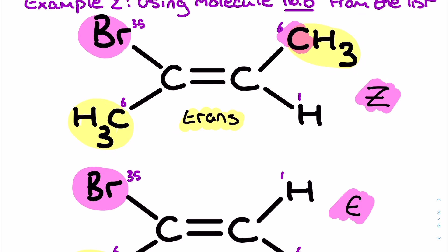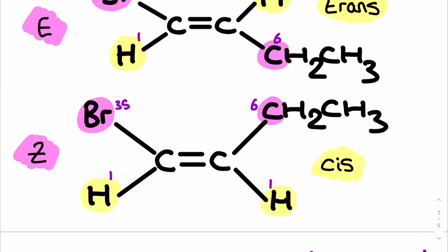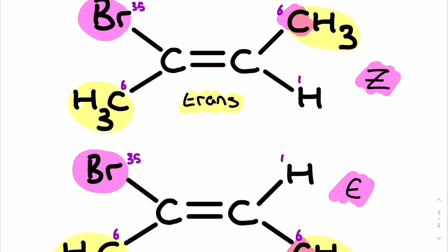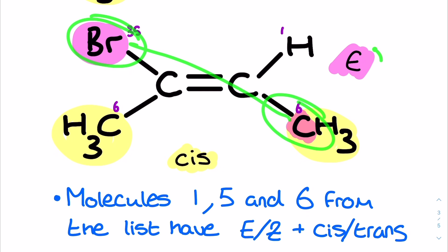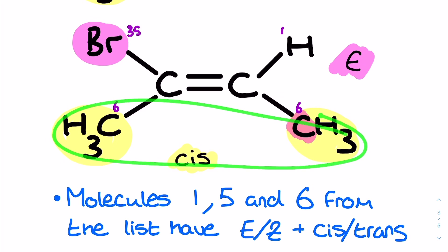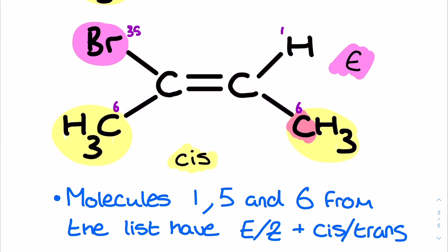This structure is different from last time because the Z stereoisomer here is also labeled trans. Each carbon in the double bond is bonded to a CH3, and these two CH3s — being the same substituent — are positioned above and below on opposite sides. Because the same groups are on opposite sides, unlike the high priority groups, this molecule is labeled Z and labeled trans. The structure underneath has the high priority groups above and below, making it the E stereoisomer, and the two CH3s are on the same side making it cis.